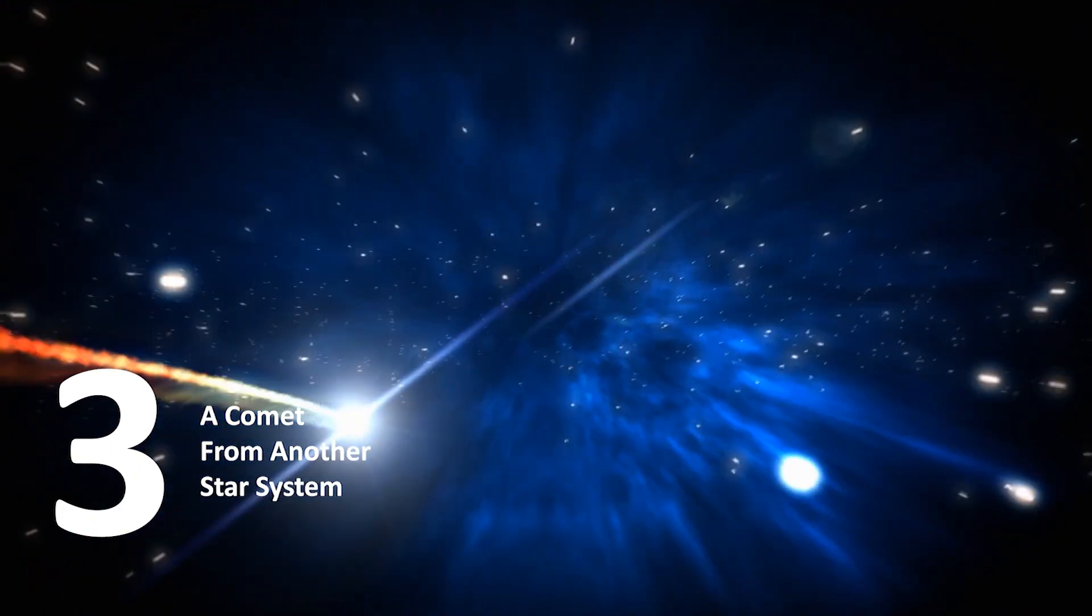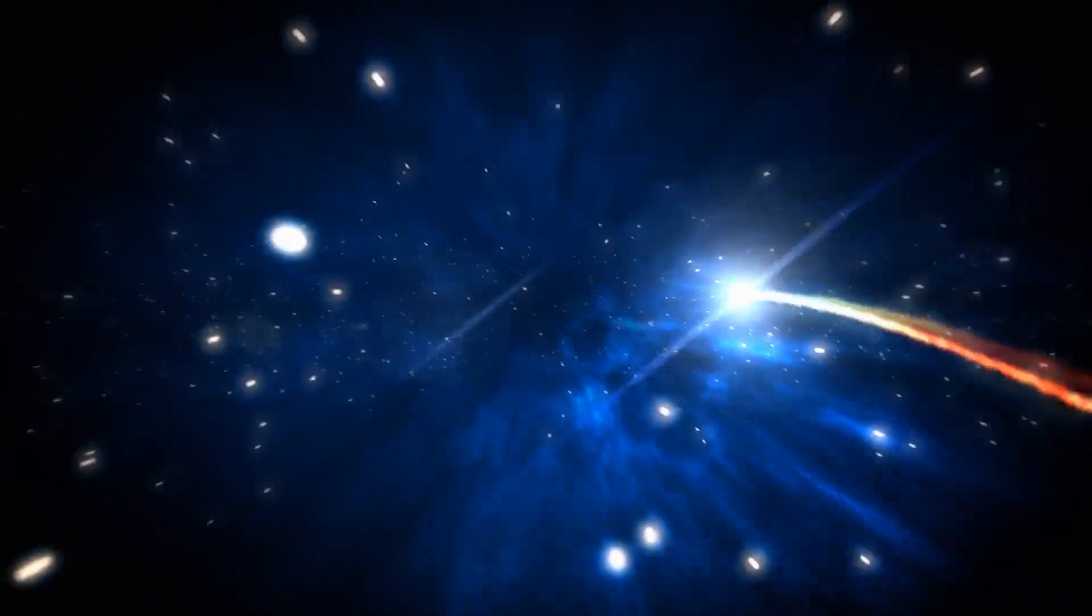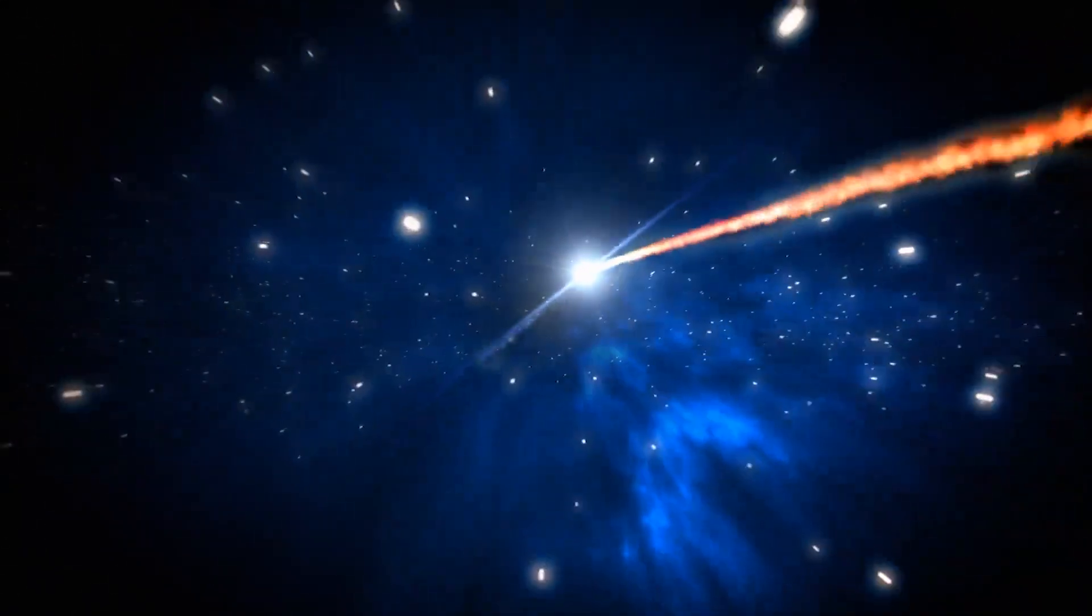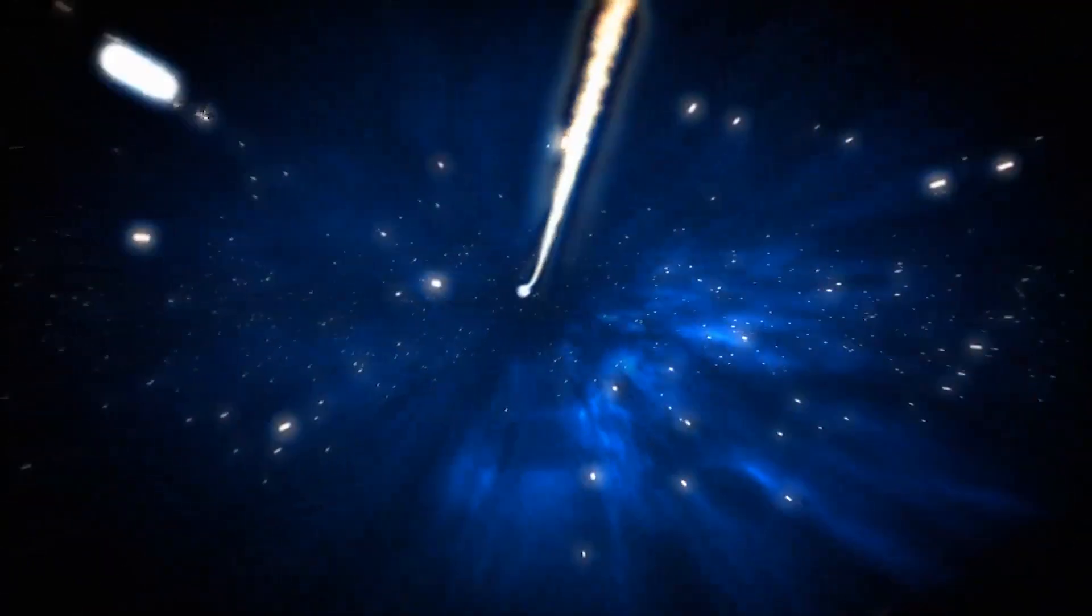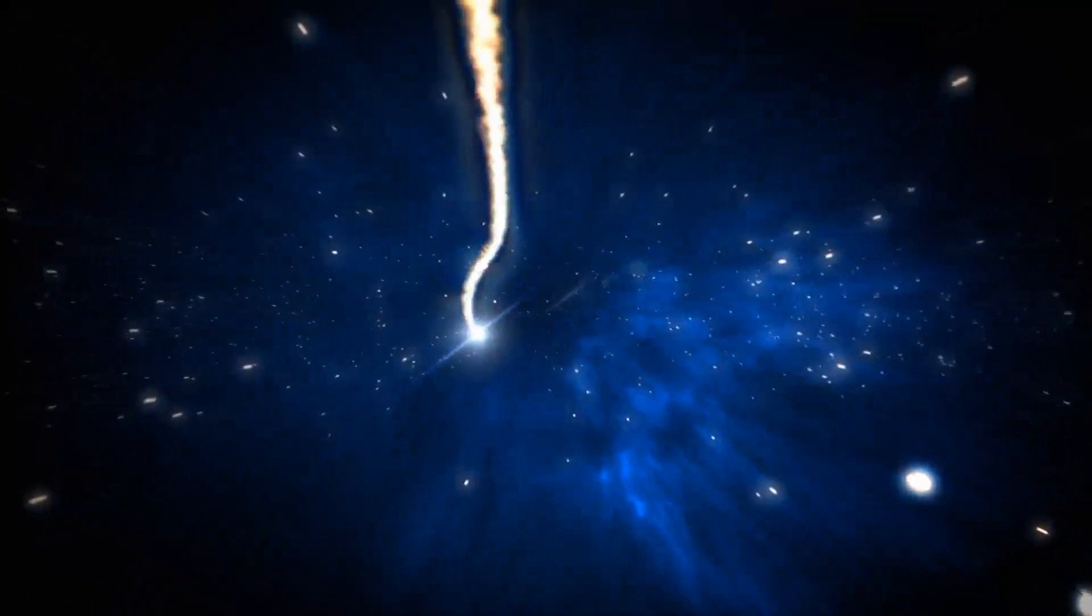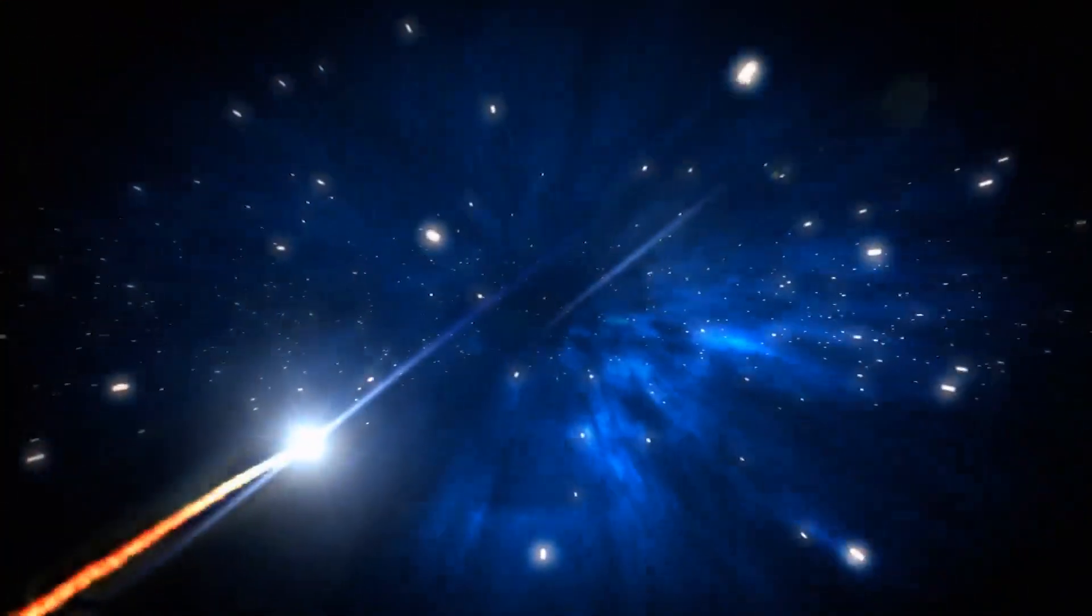In August, for the second time ever, astronomers have detected an interstellar object traveling through our solar system. Scientists named the comet C-2019-Q4-Borisov and there's a high chance that this body of ice and dust has come from beyond our solar system.